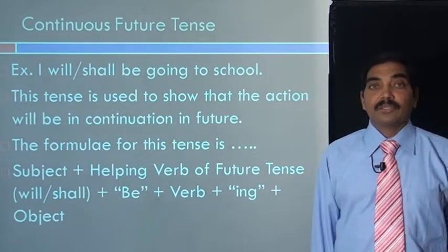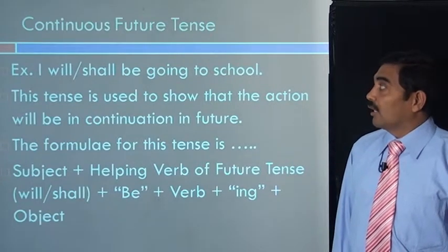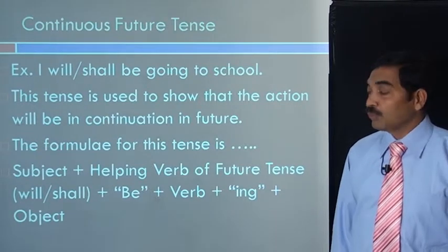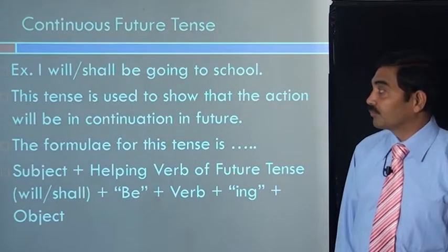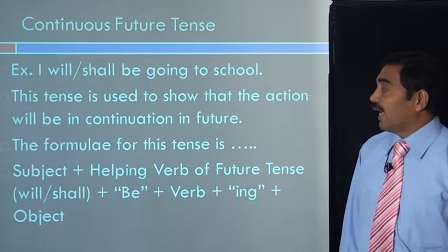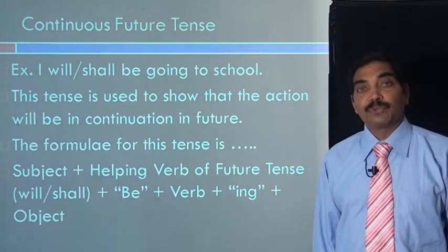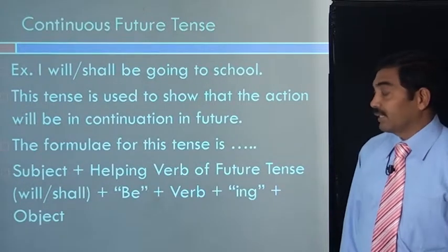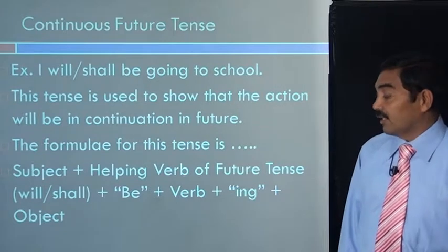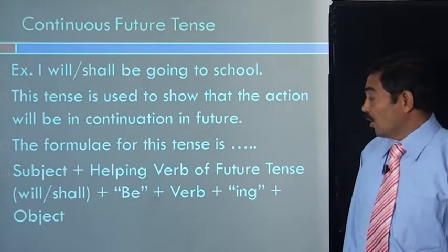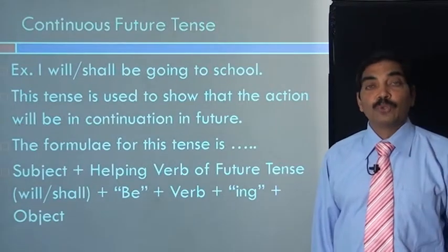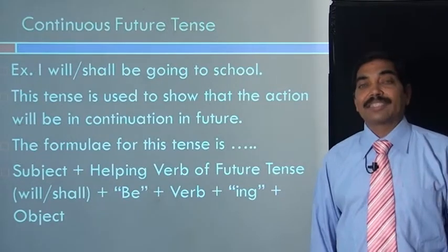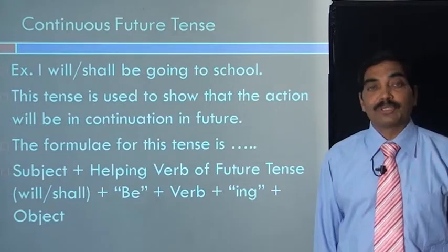Let us go to the tenth form, that is continuous future tense. Example: I will be going to school or I shall be going to school. This tense is used to show that the action will be in continuation in future. The formula for this tense is subject plus helping verb of future tense — that is will or shall — plus be, plus verb — that is go — plus ing, plus object to school. Remember, be and ing are added in the sentence structure while forming continuous future tense.